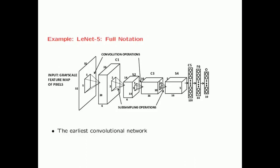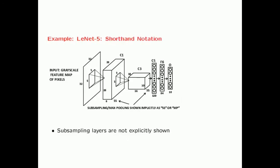In the full notation, subsampling (analogous to max pooling) is shown as a separate layer. But in modern architecture diagrams, max pooling or subsampling is often shown implicitly as SS or MP, or not shown separately at all, because modern architectures are very deep and there is insufficient page space to show all layers explicitly. Often only the important layers are shown, with others in shorthand.